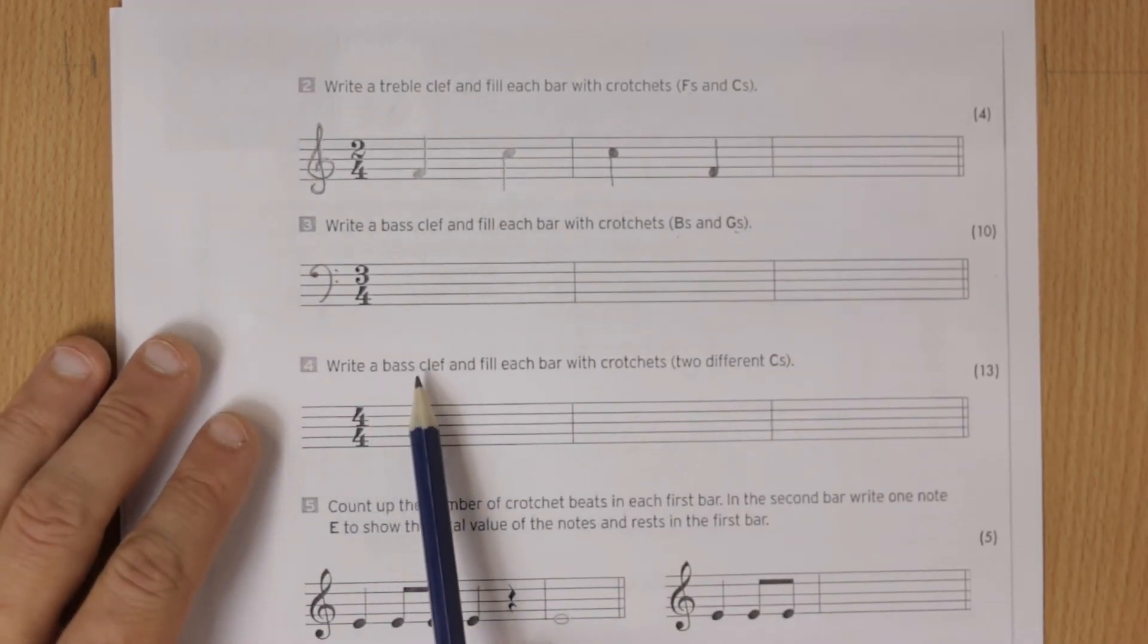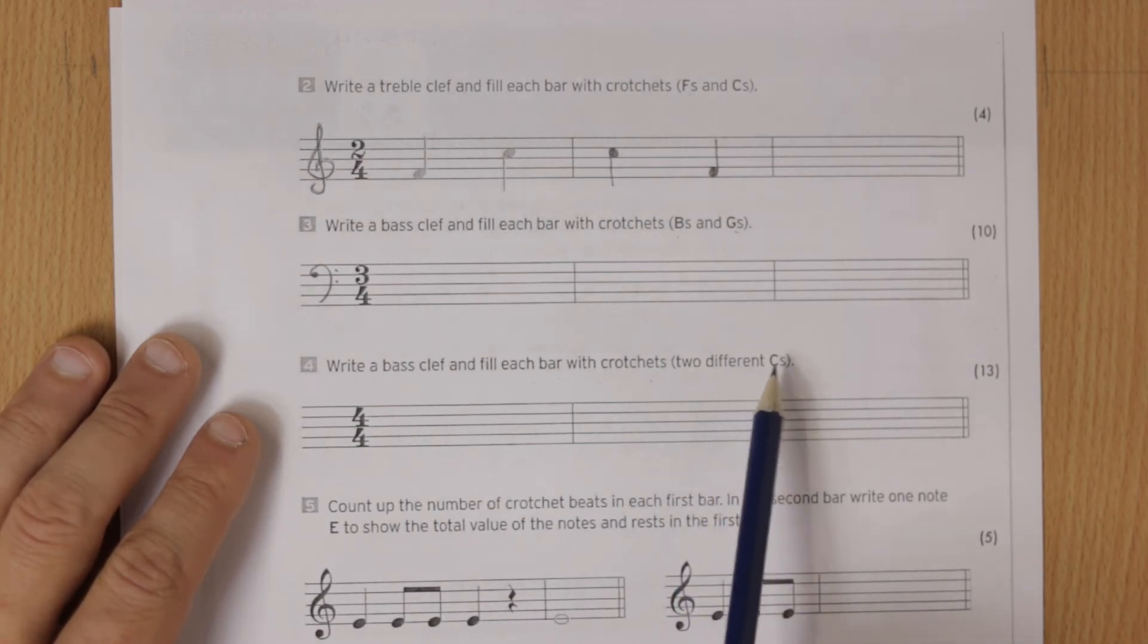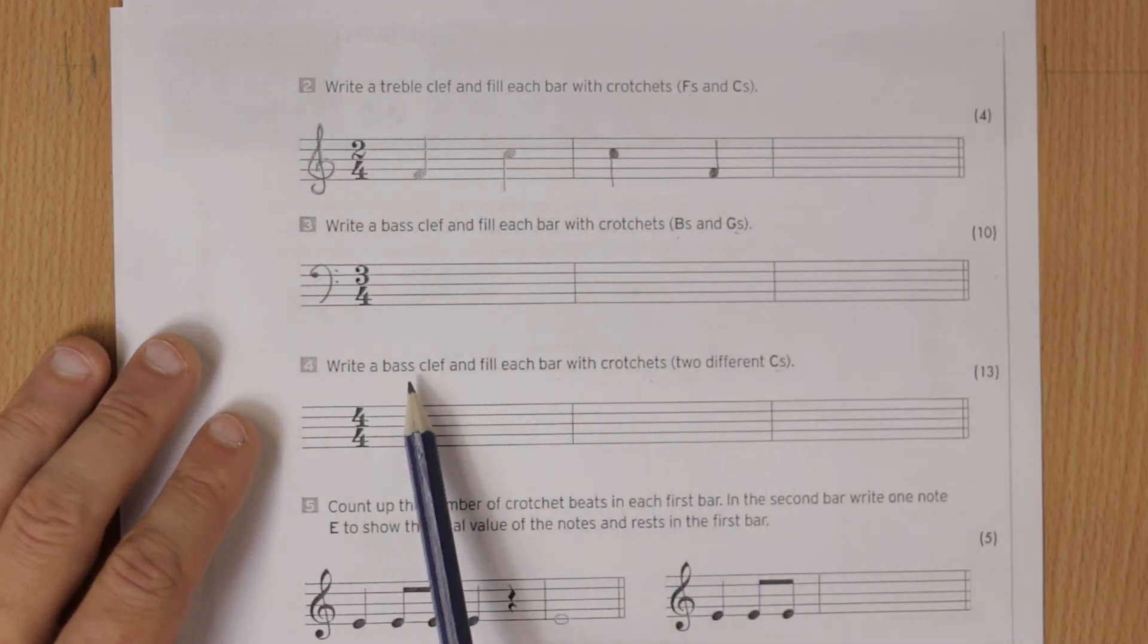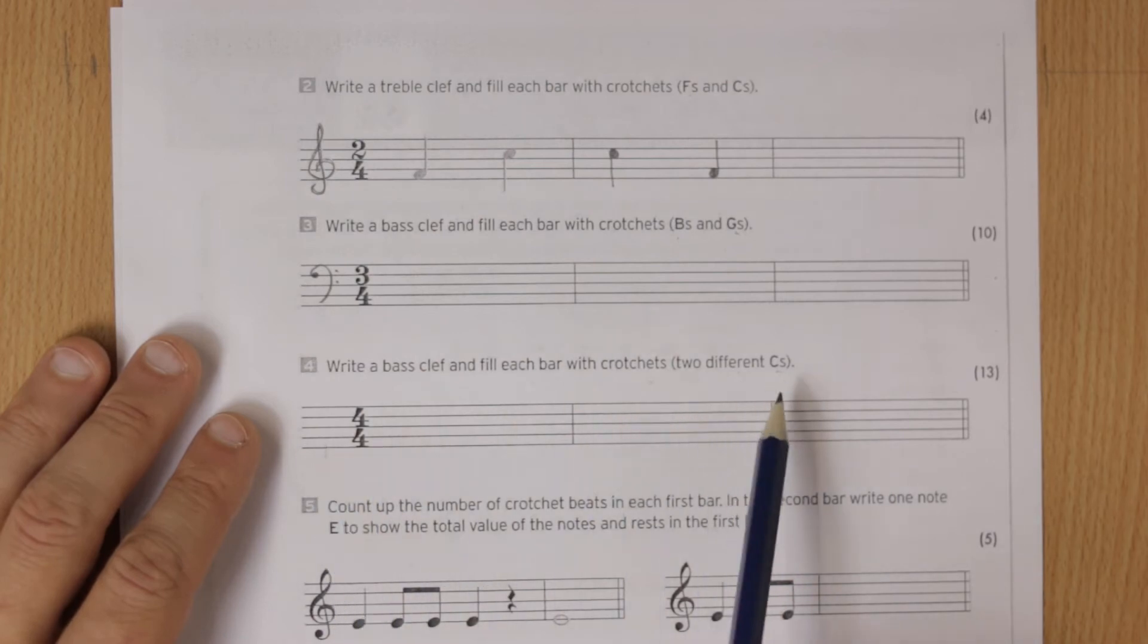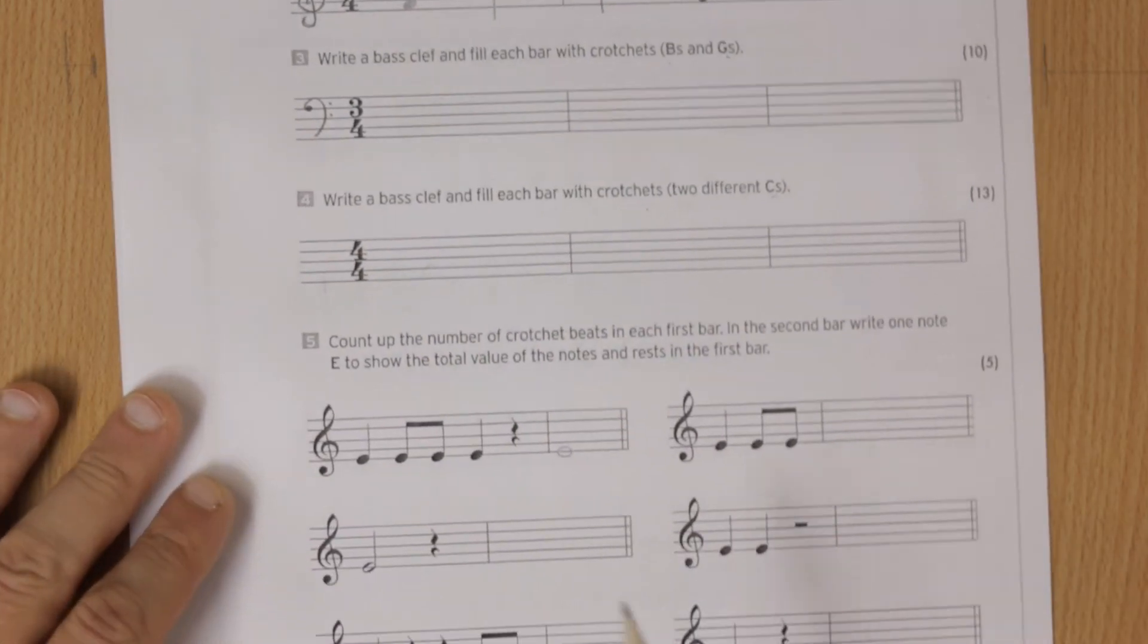Then write a bass clef and fill each bar with crotchets - two different C's. Bass clef is like that, and you work out where the C's. One can be a middle C and one can be a different C, but it's got to be four in each bar.